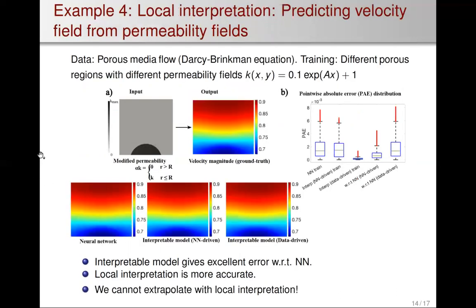We also demonstrate local interpretation on the porous media problem. Here there is no extrapolation — we interpret locally within a subset of the trained parameter regime, which reduces variability in the data and makes the interpretable model's job easier. The interpretable models give excellent agreement with the neural network, and local interpretation achieves better errors than global interpretation. Of course, with local interpretation we cannot extrapolate, because we don't see the entire data.